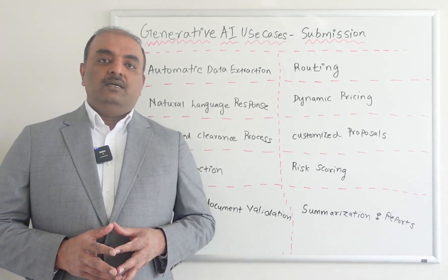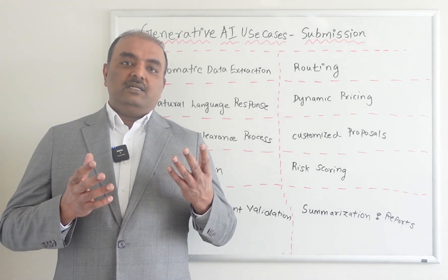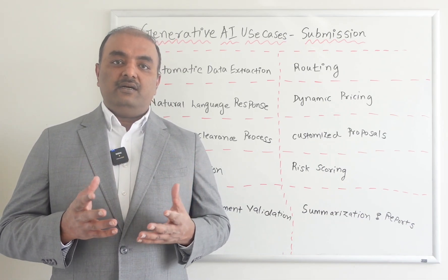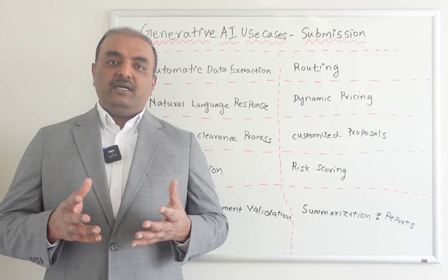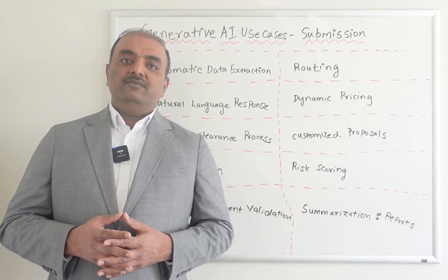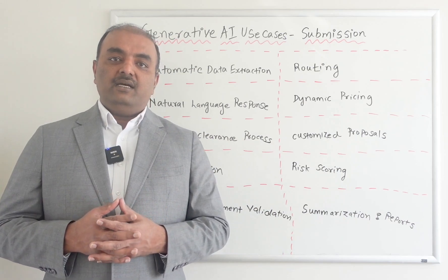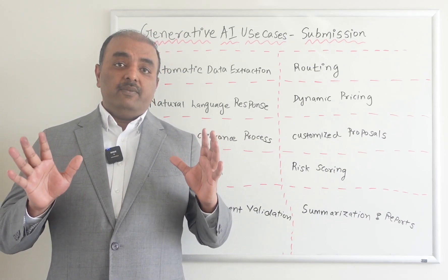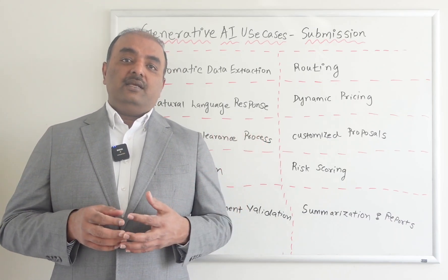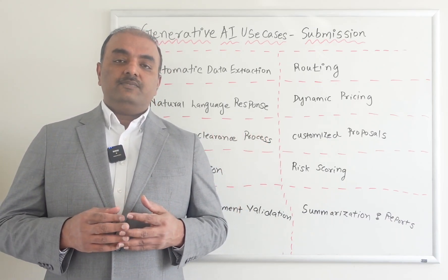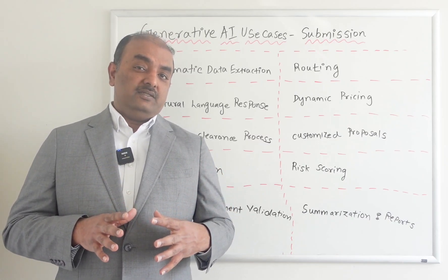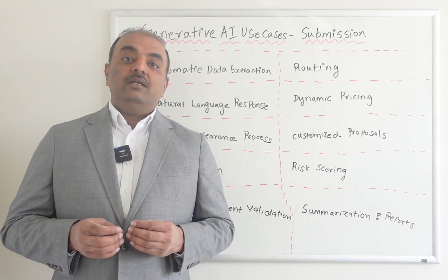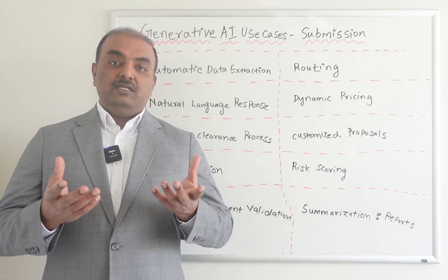Fraud detection. Most of us know when you get the submission information, sometimes customers or brokers can give wrong or fraudulent data to get policies which are not matching with the actual data. So with Generative AI having the capability of handling humongous data, it can definitely do pattern matching and if there is any fraudulent information within the submissions — like their property data or anything of that sort — it can immediately give a warning to the insurance company.